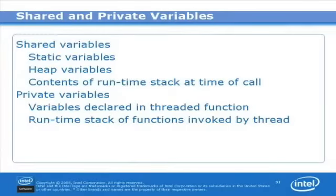From these examples, we can see that all static variables or all heap variables or any variable that's on the runtime stack of a function that calls a threaded function are all going to be shared by default. Examples of private variables are any variable that has been declared within a function that's threaded or the parameters that are sent to a threaded function.